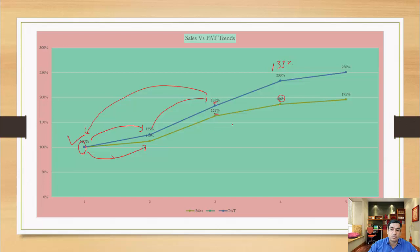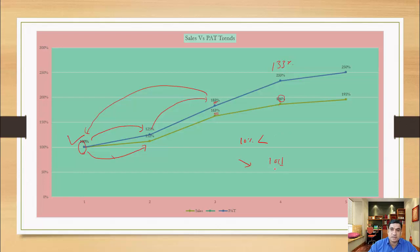This is a good trend where sales is increasing by some percentage but profit is increasing by more than the increase in sales. You should identify the reason behind it. When sales increases by only 10%, profit is increasing by more than 10%. The question is: when a downward trend comes and sales goes down by 10%, will profit go down by a similar or greater amount?